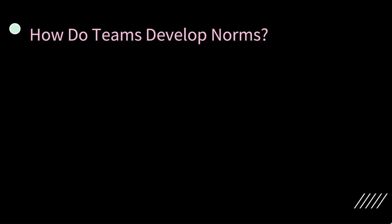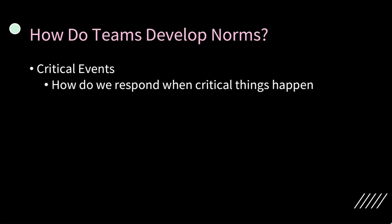How do team norms develop? First, sometimes it happens out of crisis. When a critical event happens, how we respond shapes our norms. You've probably been on a team — whether a classroom or work team — when COVID hit. That was a crisis. When things shut down in March, whether you were in school, retail, or a restaurant, you had to figure out how to deal with this crisis. Based on those new rules, we developed team norms that have absolutely changed how we work.